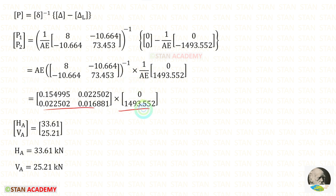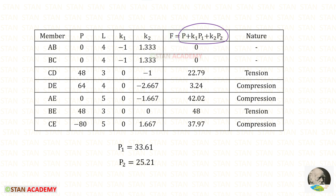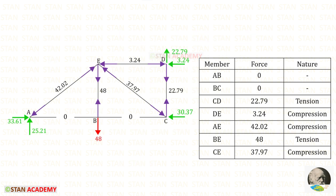After multiplying the matrices we get Ha and Va. Both have positive values, meaning our assumptions are correct. Using the member force formula, we find the real member forces. Positive values indicate tensile forces and negative values indicate compressive forces. All member forces have been entered in the truss. Taking joint D — there is no inclined member — Vd acts upwards and Hd acts towards the left side.